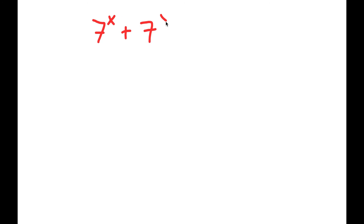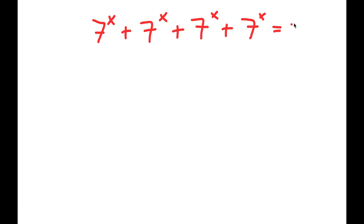So in this problem, I have 7 to the power of x plus 7 to the power of x plus 7 to the power of x plus 7 to the power of x is equal to 28.